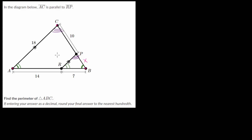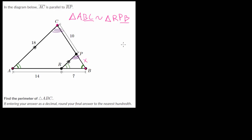With this, we've proven that these two triangles share three sets of equal angles, and we can write that triangle ABC is similar to triangle RBP. You want to be careful to write this in the correct order, since the position of the letters denotes which angles and sides correspond to each other in the two triangles. This means that side PB corresponds to side CB in the bigger triangle, and so on for the rest of the angles and sides.